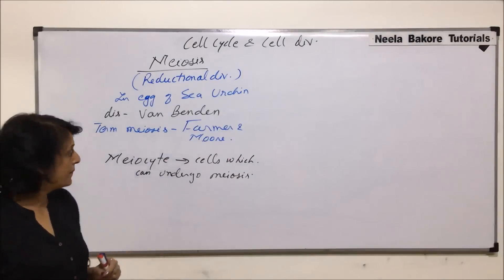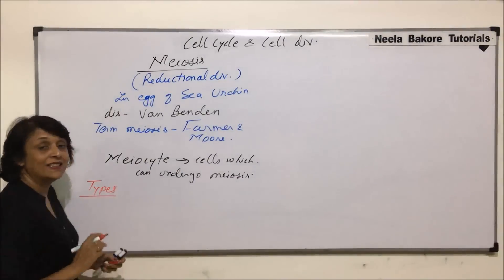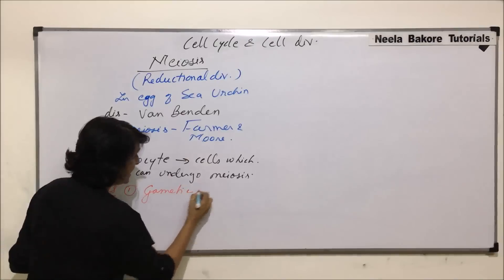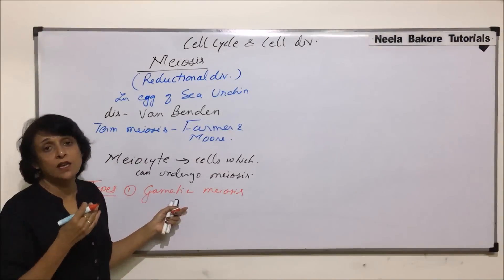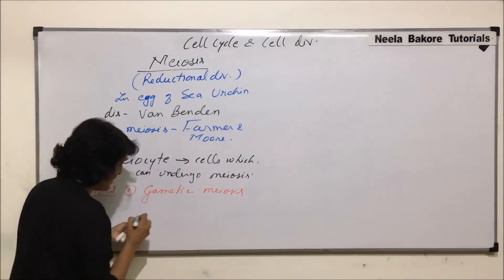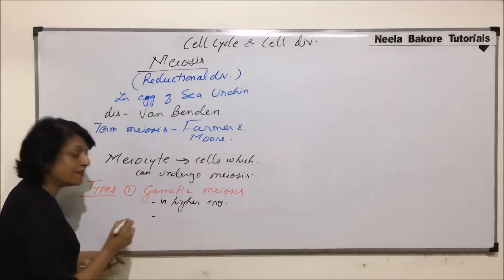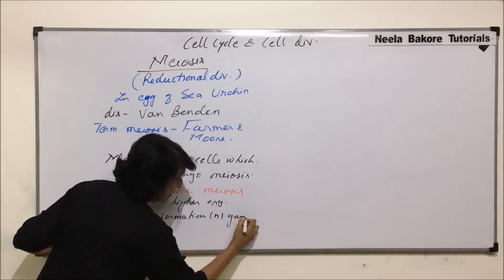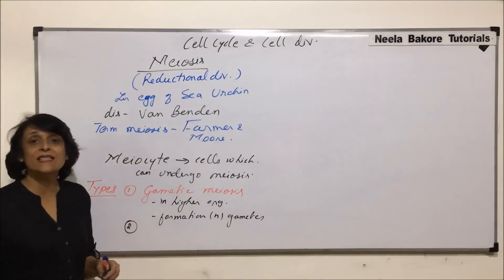There are three types of meiosis. The first is known as gametic meiosis. In higher organisms, the cells of the testes or ovaries undergo this kind of division to produce gametes. It is seen in higher organisms and it results in the formation of haploid gametes.